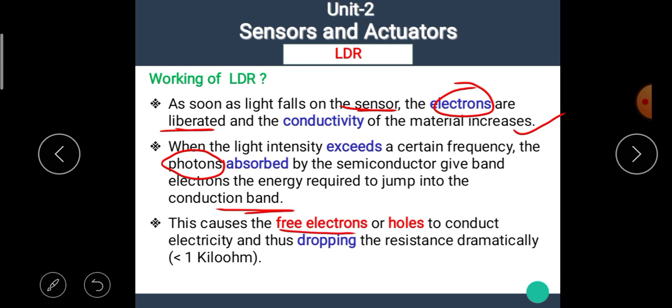The material or the photo sensitive material absorbs the energy of the light in the form of photons and the electrons jump from valence band to conduction band. This causes the free electrons or holes to conduct electricity and thus dropping resistance dramatically. I hope you all understand the working principle of LDR. It is very simple. The LDR is made up of photo sensitive material. When the light falls on this photo sensitive material, then it absorbs the energy of the light, which is in the form of photons. When the electrons get the energy of photons, then electrons jump from valence band to the conduction band. And in this process, it causes the generation of free electrons and holes. And we know that free electrons and free holes cause the electricity to flow in the material, and hence its resistance decreases.